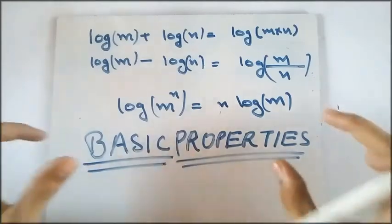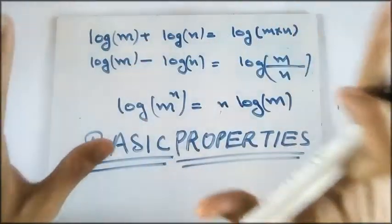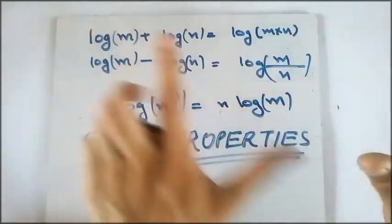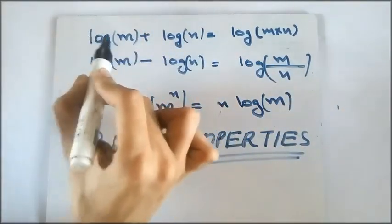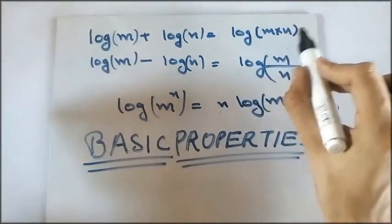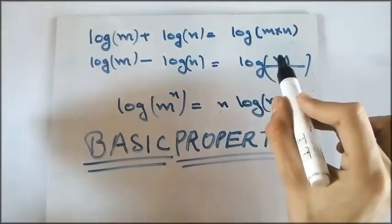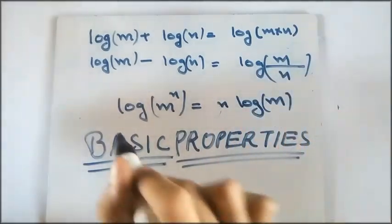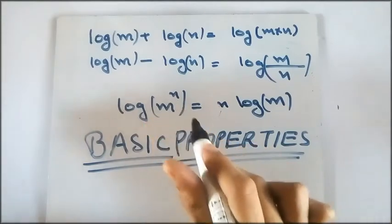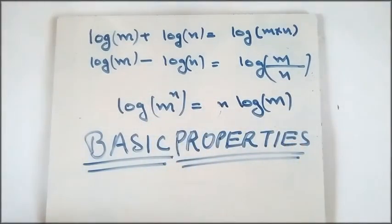So let's look at some of the basic properties of logarithms. These properties are also the formulas of logarithm and they are very important. So log m plus log n is equal to log m multiplied by n. Log m minus log n is equal to log m divided by n. Log m raised to the power n is equal to n log m.